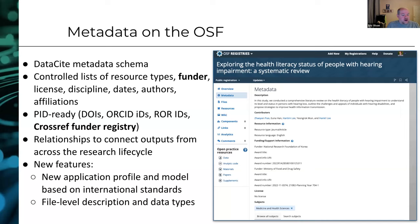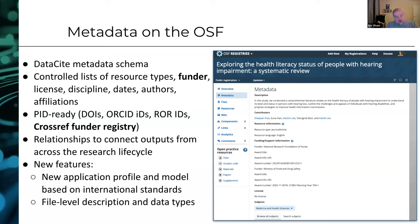We use controlled lists for resource types, funders, licenses, subjects and disciplines, dates, and authors. There's no free-text entry of authors on the OSF — they're associated with profiles. That goes for affiliations too. If you use our member interfaces for your institution, authors can add their affiliation to their work, and that affiliation comes with the institution's ROR ID — the Research Organization Registry.